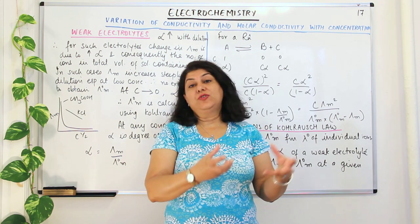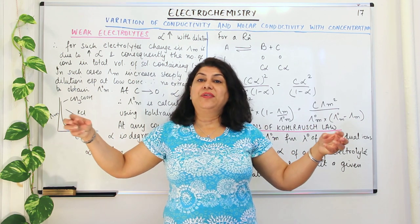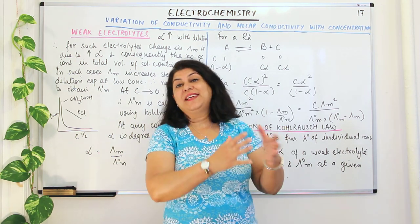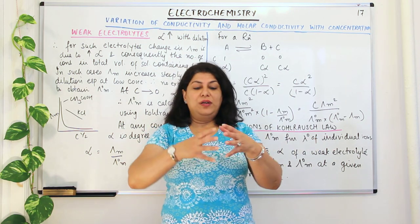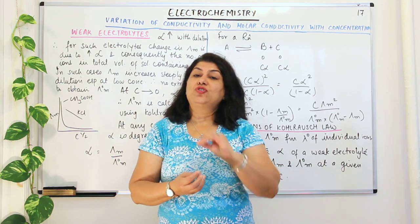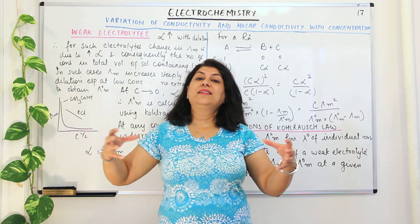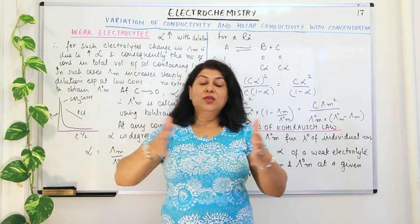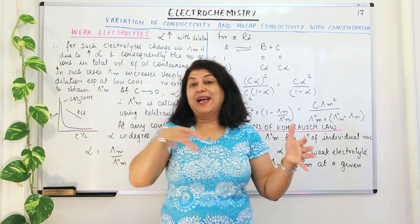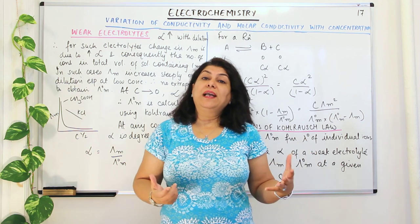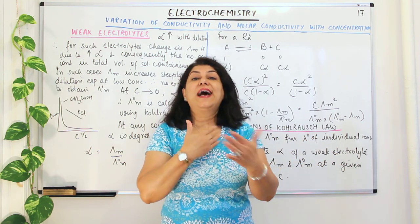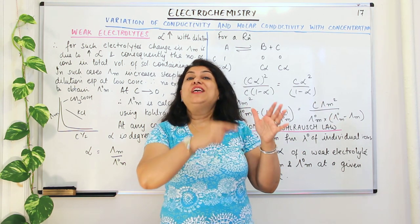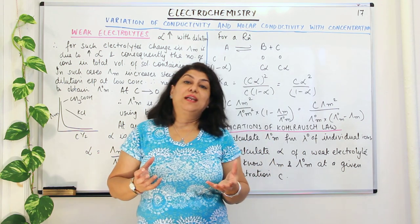As you go on diluting a solution, the distance between the ions increases and therefore the ions cannot recombine to give you back the reactant. If you had one mole of solute in the solvent and you start increasing the solvent, the volume increases and that one mole of solute is now present in a larger volume. The dissociated ions do not collide as much to reform the reactant. So as dilution increases, the degree of dissociation of the weak electrolyte increases.